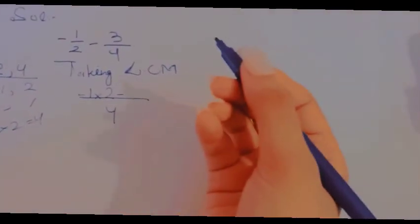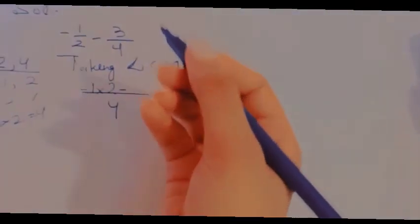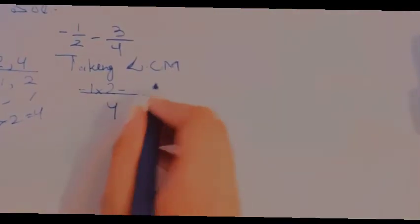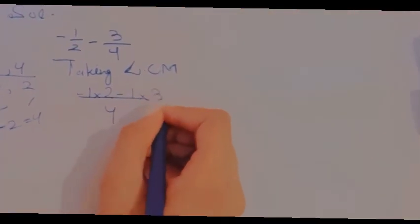Minus 1 multiply 2. Minus. We're gonna bring the minus down. So 4 what's our 4? 4, 1s are 4. So we're gonna multiply that 1 with the denominator, which is 3. So 1 multiply 3.